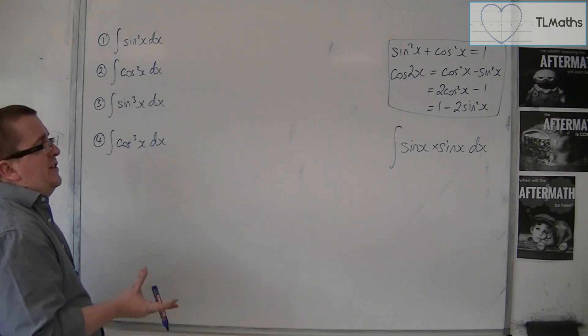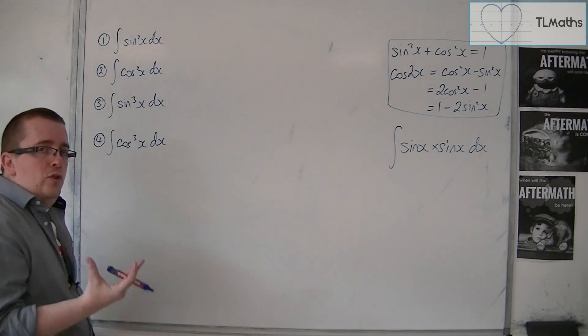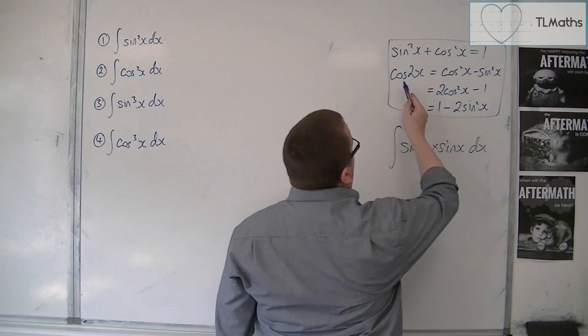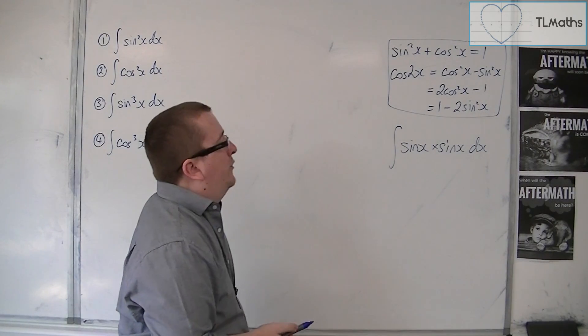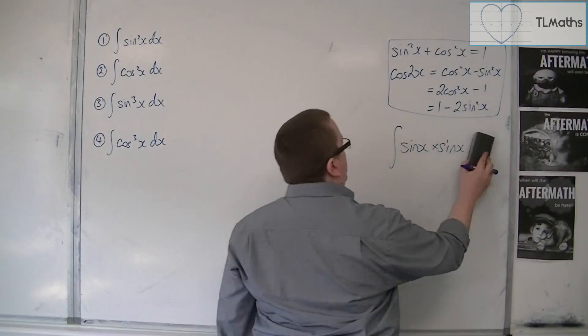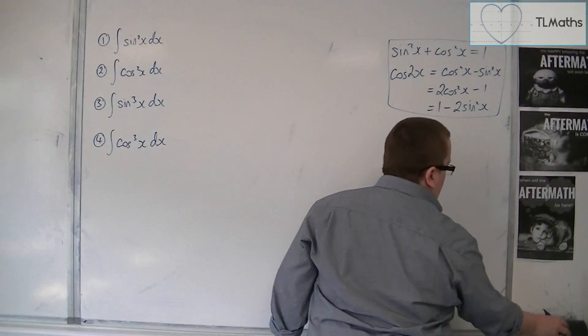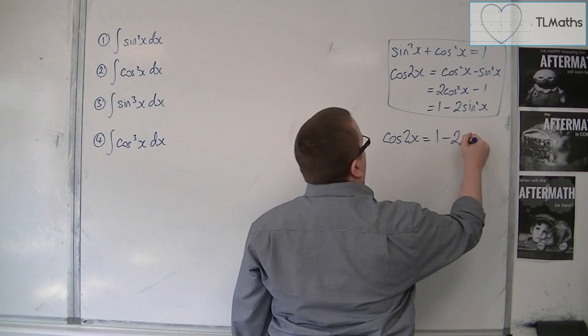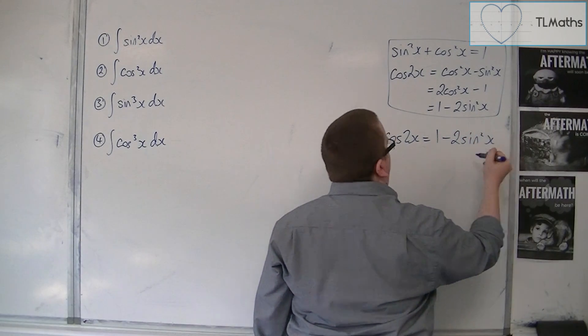So what we're going to do instead is use a trig identity. We're actually going to use this one. The one with cos2x is 1 minus 2 sine squared. So what we want to do is we want to rearrange that. So cos2x is 1 minus 2 sine squared x.